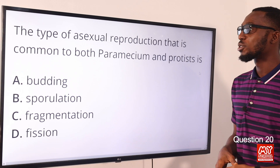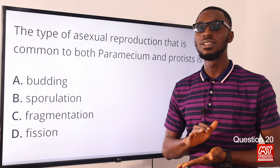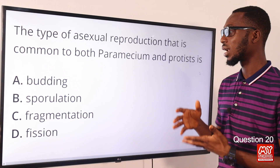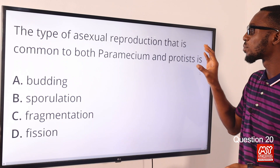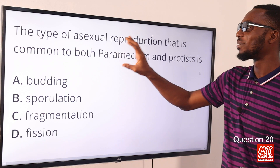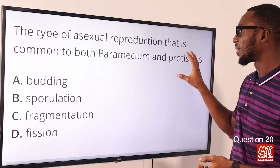Question 20: The type of asexual reproduction common to both paramecium and protist. All the options are forms of asexual reproduction. Paramecium belongs to the phylum Protozoa, alongside amoeba. So the question is asking which form of asexual reproduction is common to paramecium and a protist like amoeba.